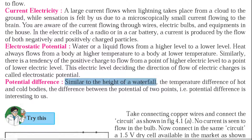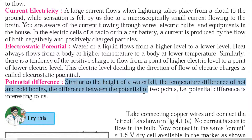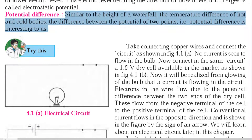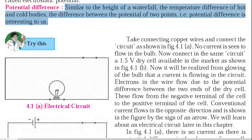Similar to the height of a waterfall and the temperature difference between hot and cold bodies, the difference between the potential of two points — that is, the potential difference — is what matters. Water falls because it is at a higher level and flows to a lower level. Heat transfers from a hotter object to a colder object. For electric current to flow, there must be a potential difference between two points in the circuit.